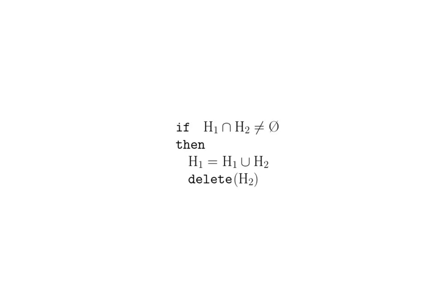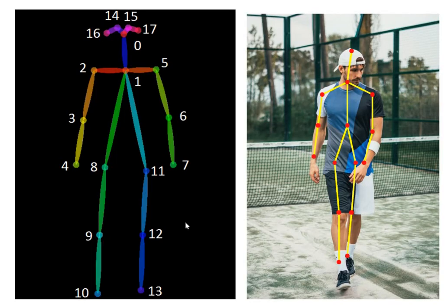The next problem is determining which pair belongs to which human — this is done in the merging step. First we consider each connection as belonging to a different individual, giving us as many humans as connections. In the merging step, if two pairs share a common vertex, we consider them as a single joint for a single human. This reduces the count from the initial number of connections down to the exact number of humans present in the image, and finally we obtain the skeleton for each person with all their parts and pairs.